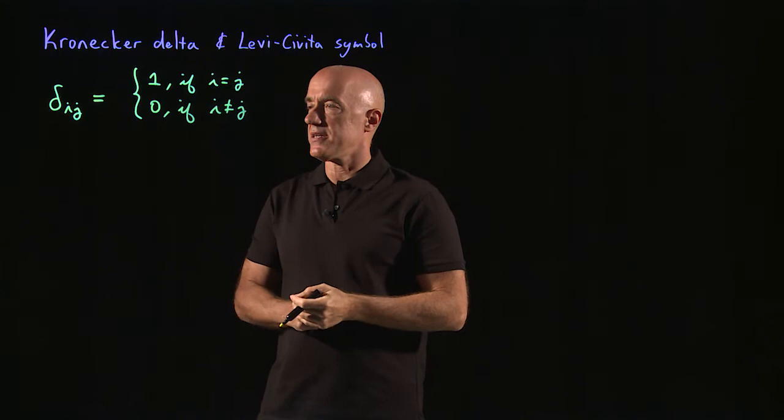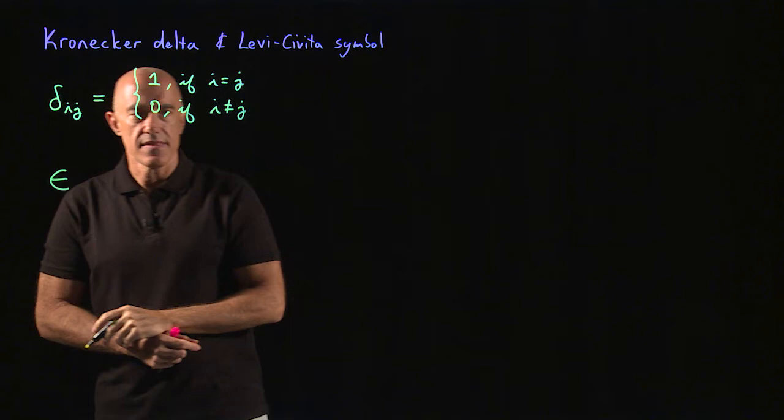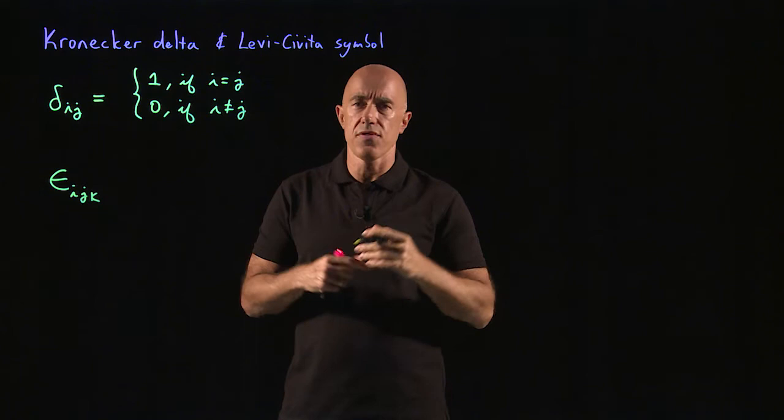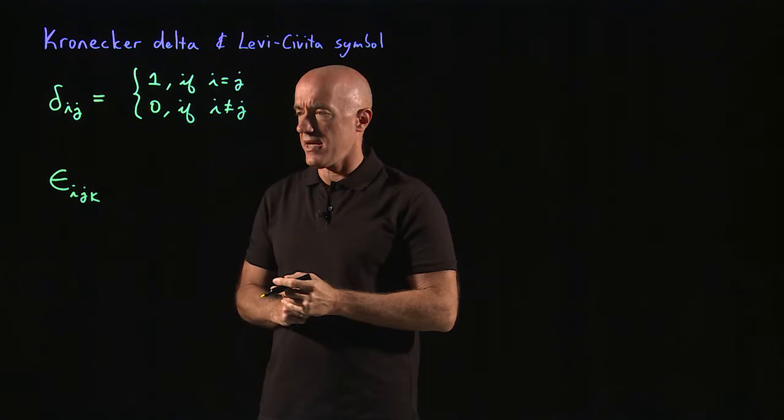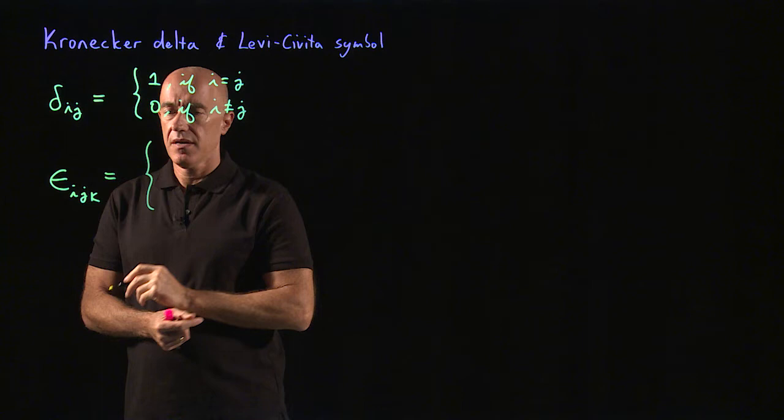That's the Kronecker delta. The other symbol is the Levi-Civita symbol. That's an epsilon, this is an epsilon. That has three indices i, j, and k. Of course, you don't have to call the indices i, j, and k. You can call them l, m, and n. You can call them anything you want. But here I'm using i, j, and k. Again, i, j, and k can take values 1, 2, or 3.